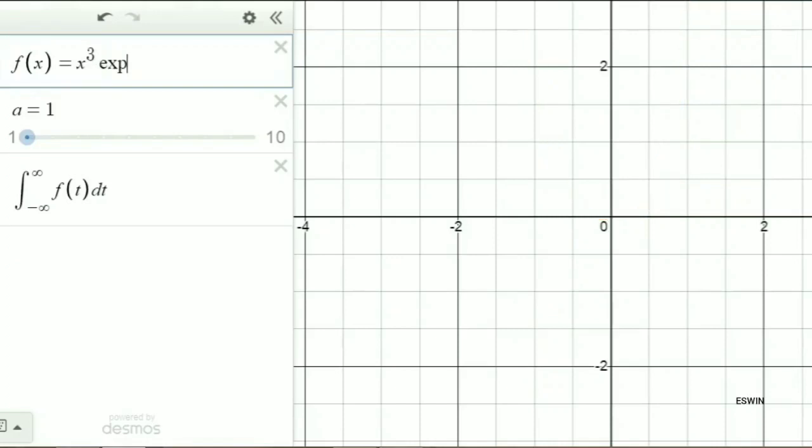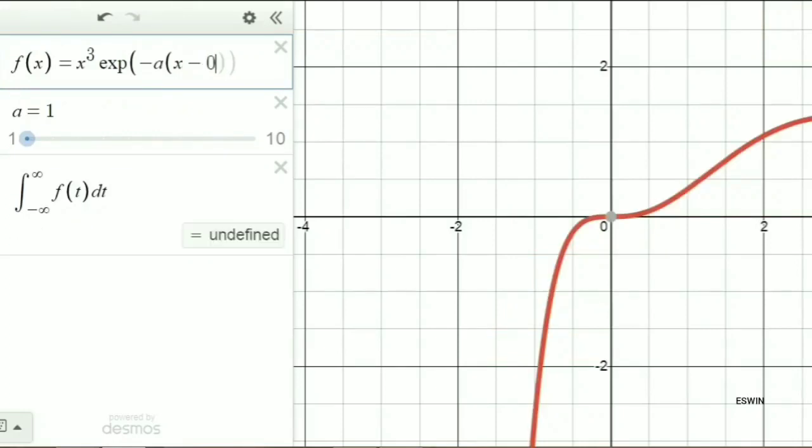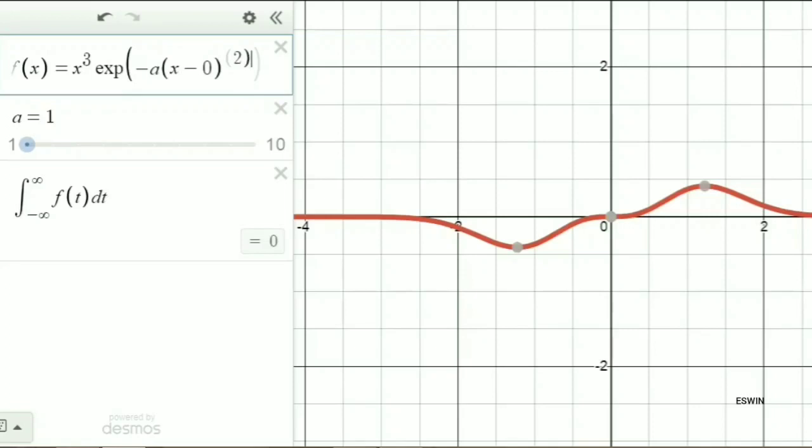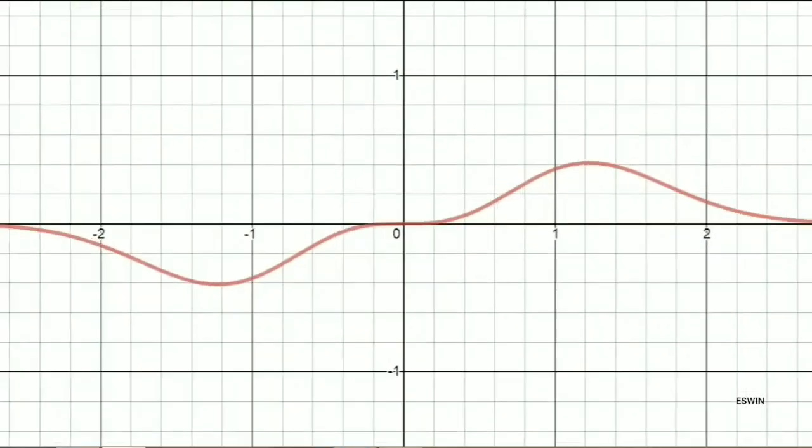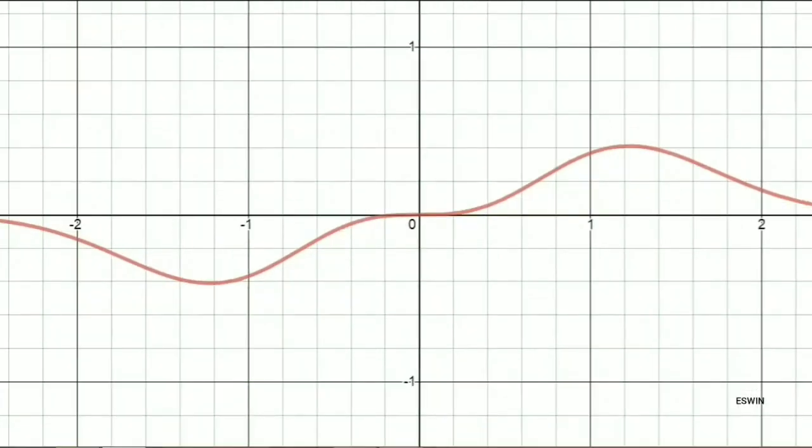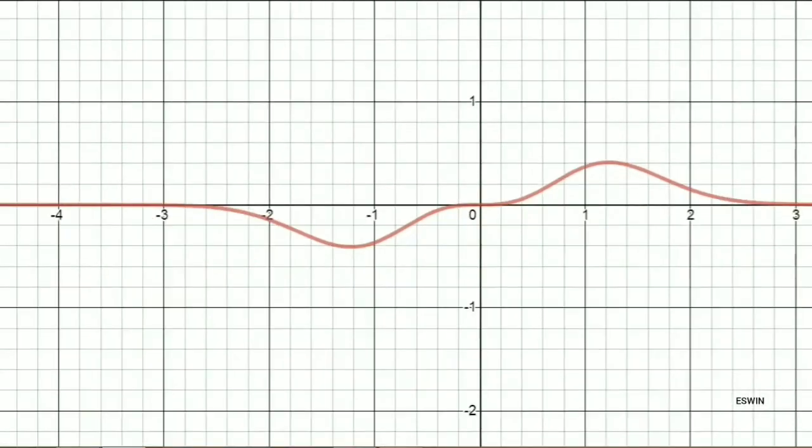Now, I am multiplying x cube with the Gaussian e raised to minus ax square. Here we can see the graph of this product. There is a negative part and there is a positive part, which will easily cancel out when we integrate with the limits minus infinity to plus infinity. So, whenever the power of x is an odd, then the integral minus infinity to plus infinity x power n e raised to minus ax square dx will be equal to zero.